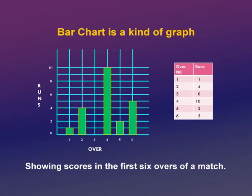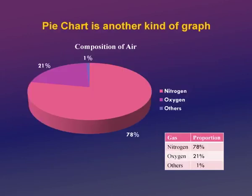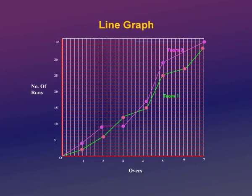So this is a bar chart. A pie chart is another kind of graph. This pie chart shows the composition of air: nitrogen is 78 percent, oxygen is 21 percent, and others is just 1 percent.